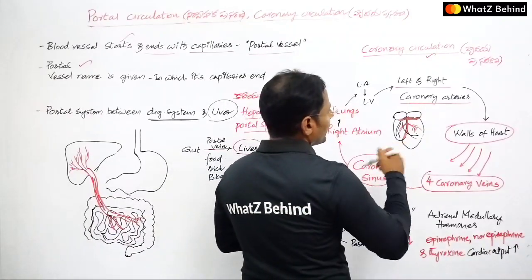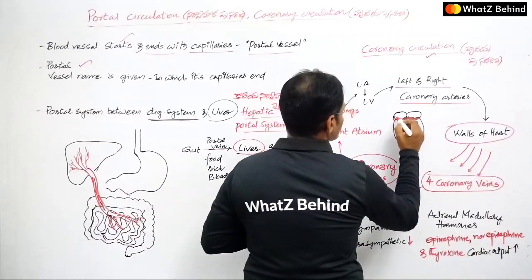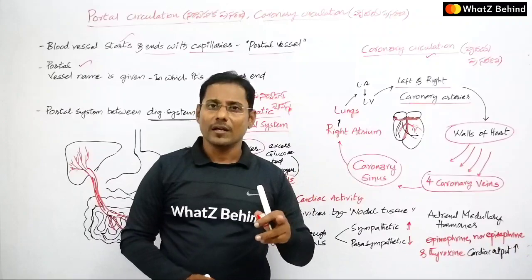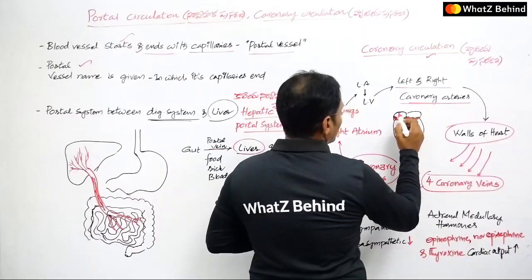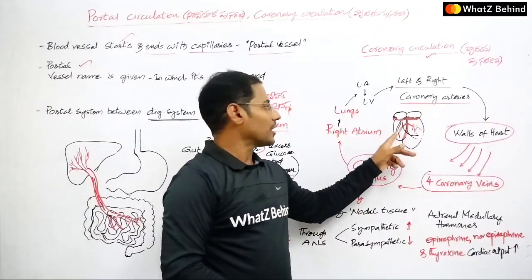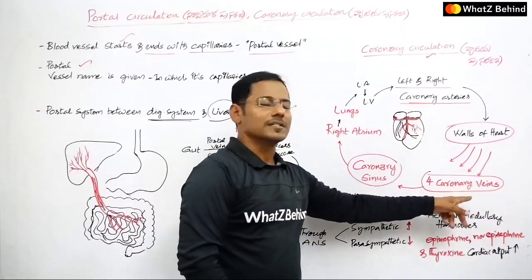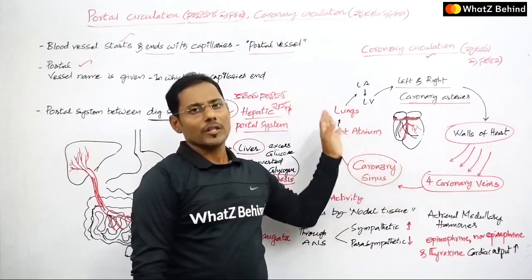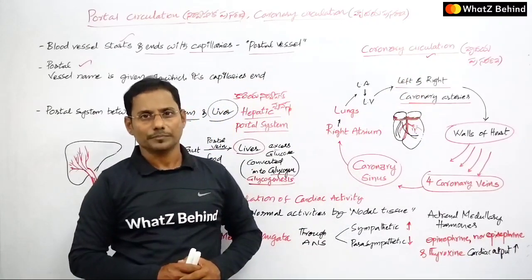The coronary sinus opens into the right atrium, completing the coronary circulation. So to summarize: through the coronary arteries, oxygenated blood is supplied to the heart muscles; through the coronary veins, deoxygenated blood drains into the coronary sinus; and the coronary sinus opens into the heart — that is coronary circulation.